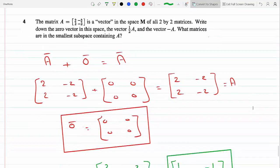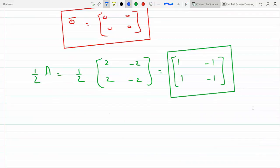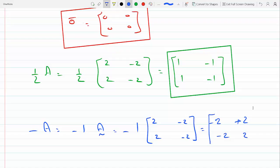And the last part of the question, it says minus A. So I just multiply the scalar minus one times matrix A. So minus one times [2, -2; 2, -2], same as the one above, so we would get [-2, 2; -2, 2]. This is minus A.